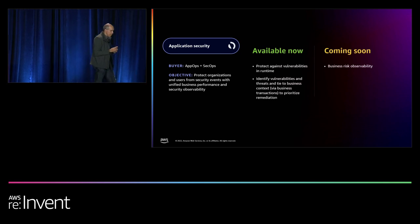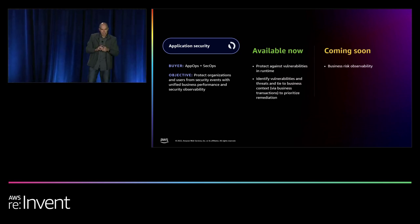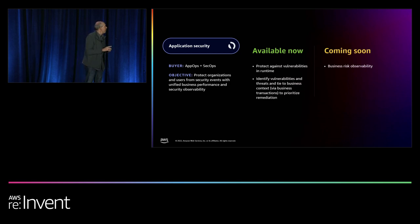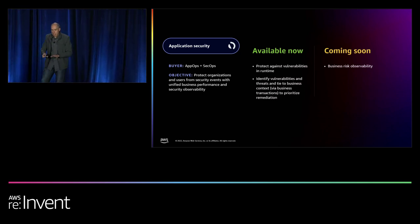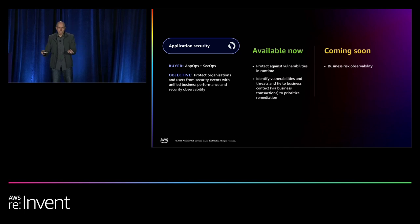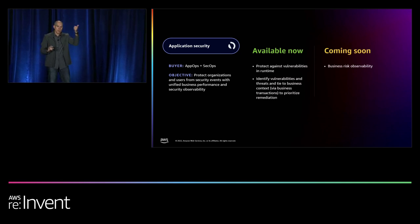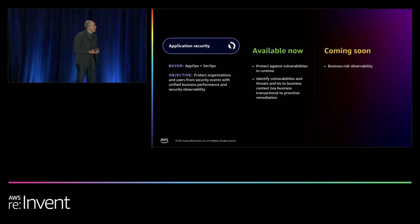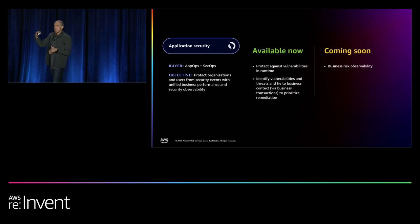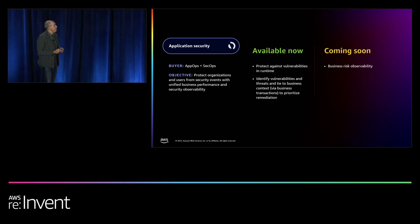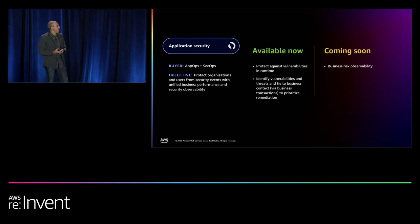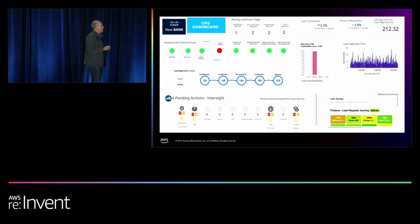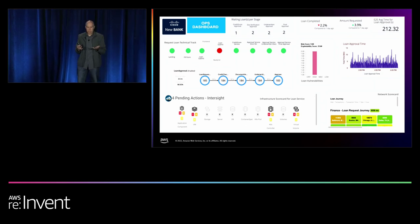The third use case is application security. Security here isn't limited to infrastructure — firewalls and network security — but covers application runtime security for traditional and cloud-native apps, CICD shift-left posture management, and API security. The idea is to protect against runtime vulnerabilities including extended API endpoints, and the business risk observability capability I described is coming in February.